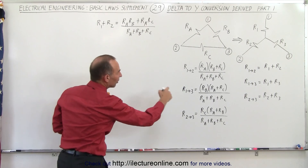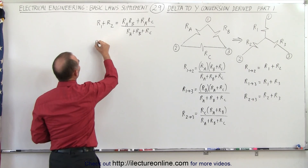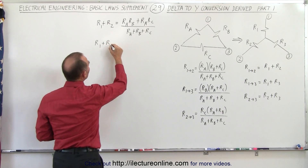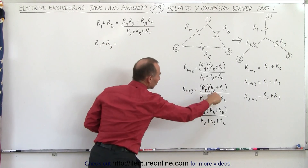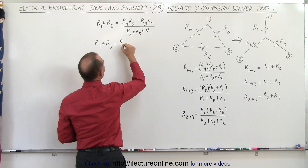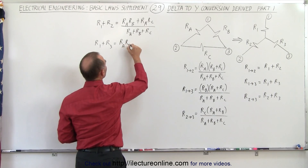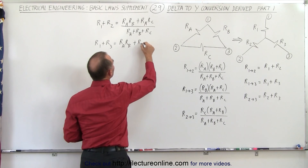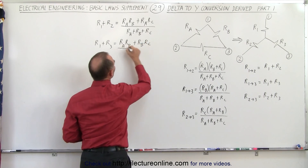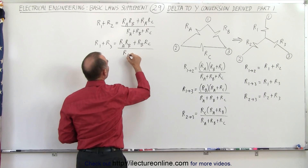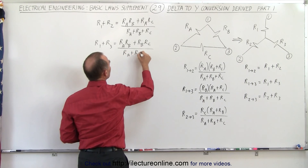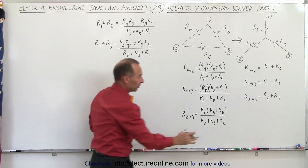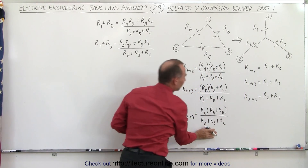Similarly, R1 + R3 must equal the resistance from one to three in the delta, which expands to (RA·RB + RB·RC) divided by (RA + RB + RC). And finally R2 + R3 must equal the resistance from two to three, which gives (RA·RC + RB·RC) divided by (RA + RB + RC).